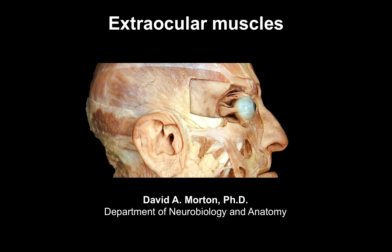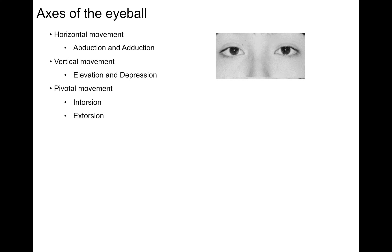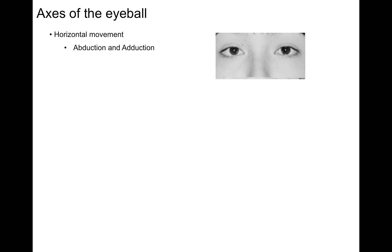We're now going to talk about extraocular muscles. To talk about extraocular muscles, we first have to discuss the axes of the eyeball and three movements: horizontal movement, vertical movement, and pivotal movement.